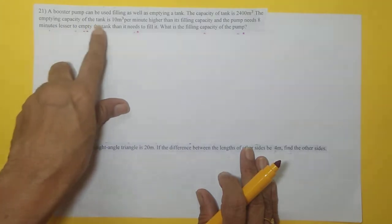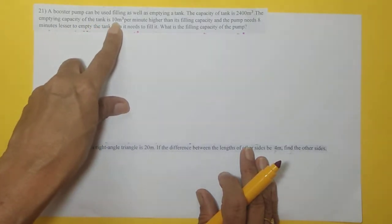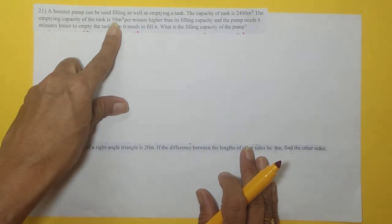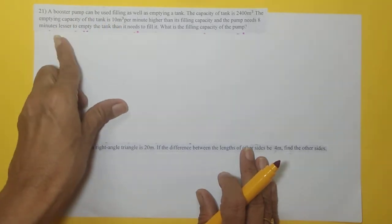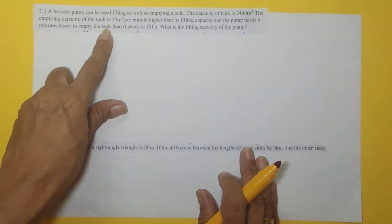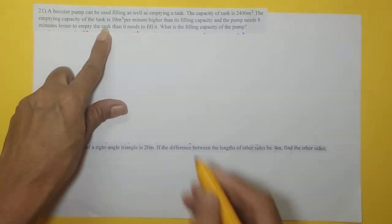The emptying capacity of the tank is 10 meter cube per minute higher than its filling capacity, and the pump needs 8 minutes less to empty the tank than it needs to fill it. What is the filling capacity of the pump?